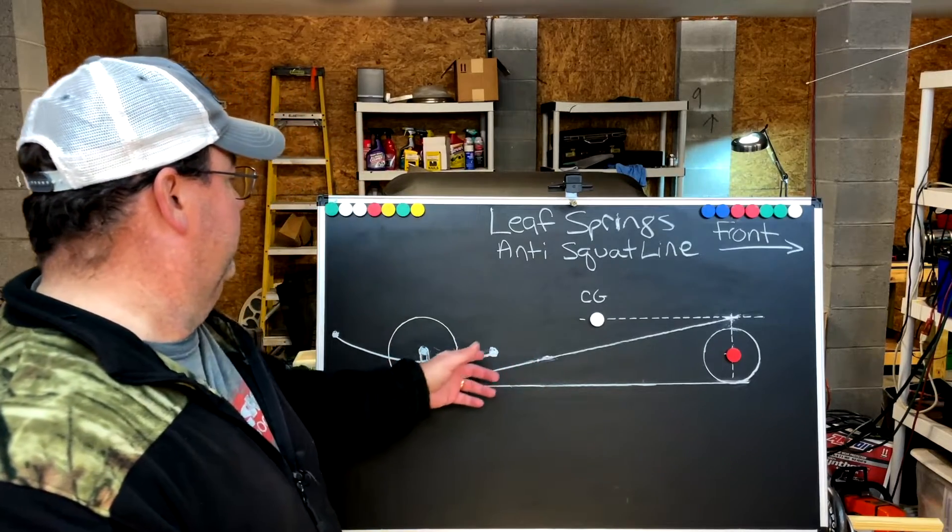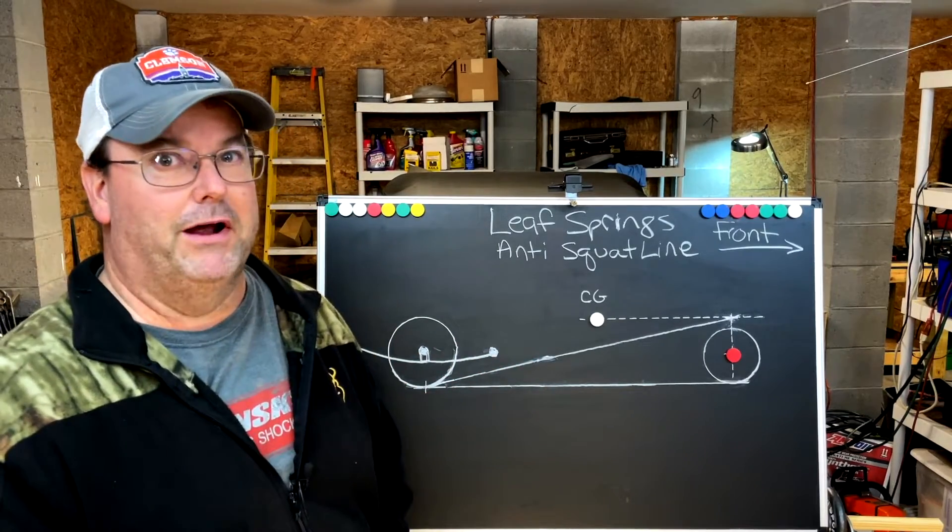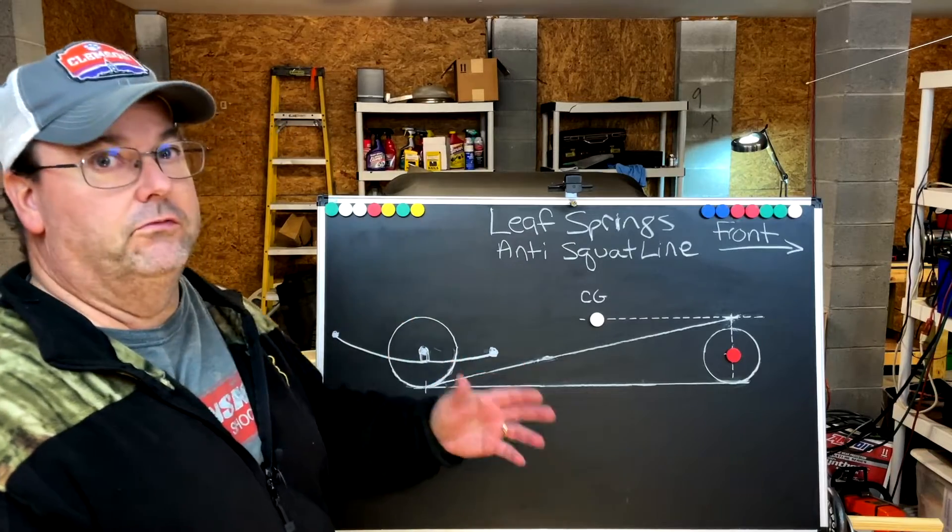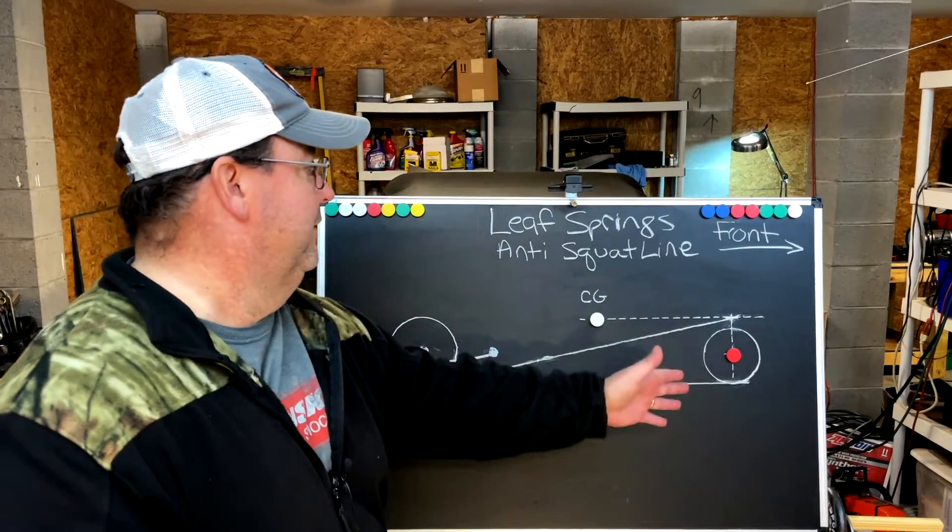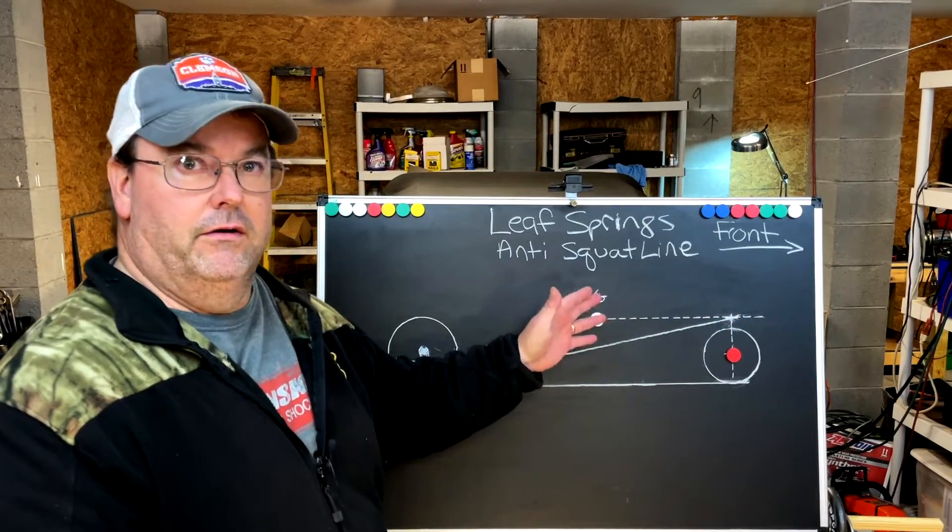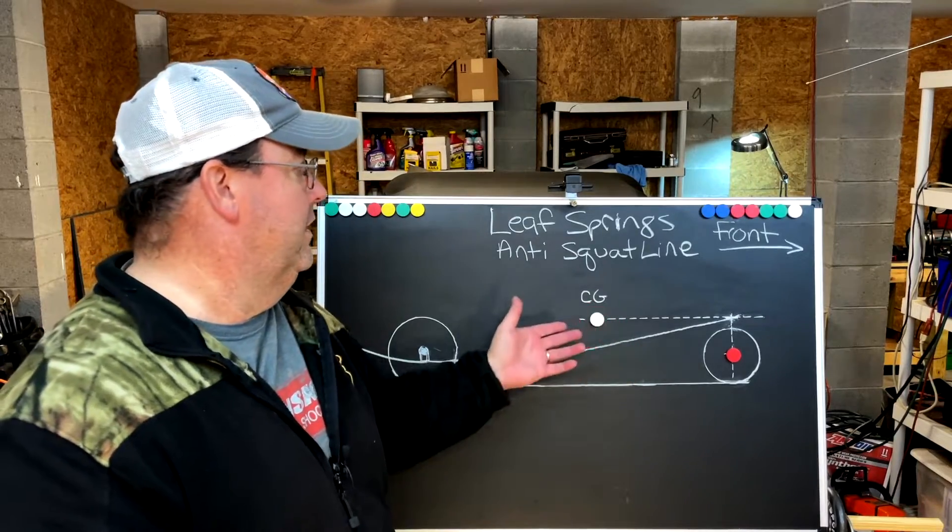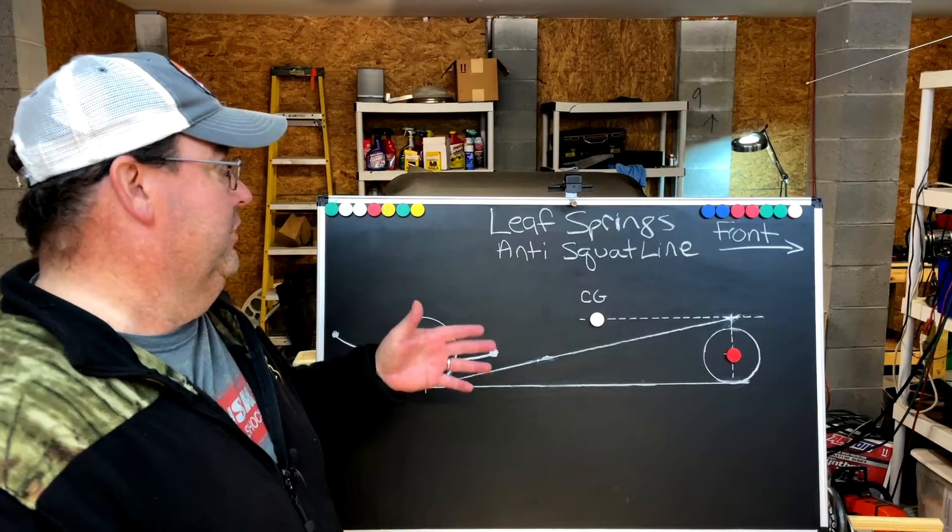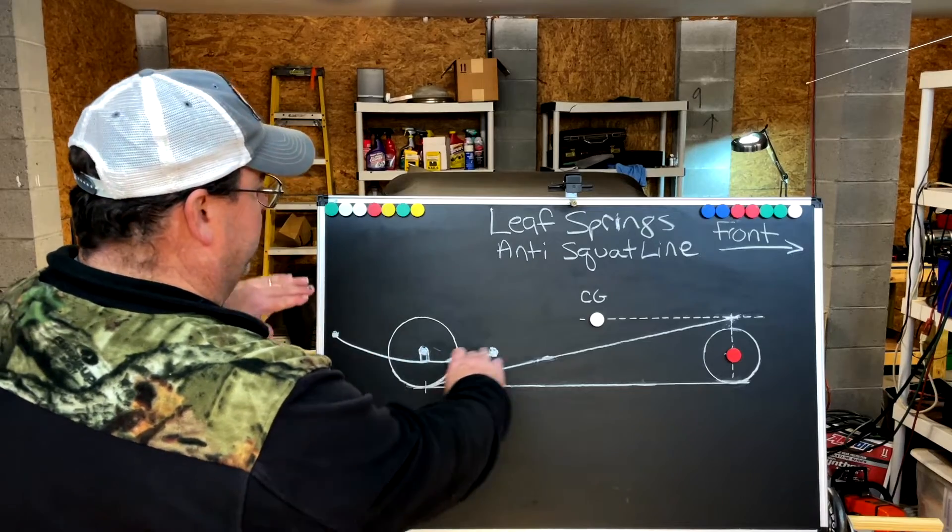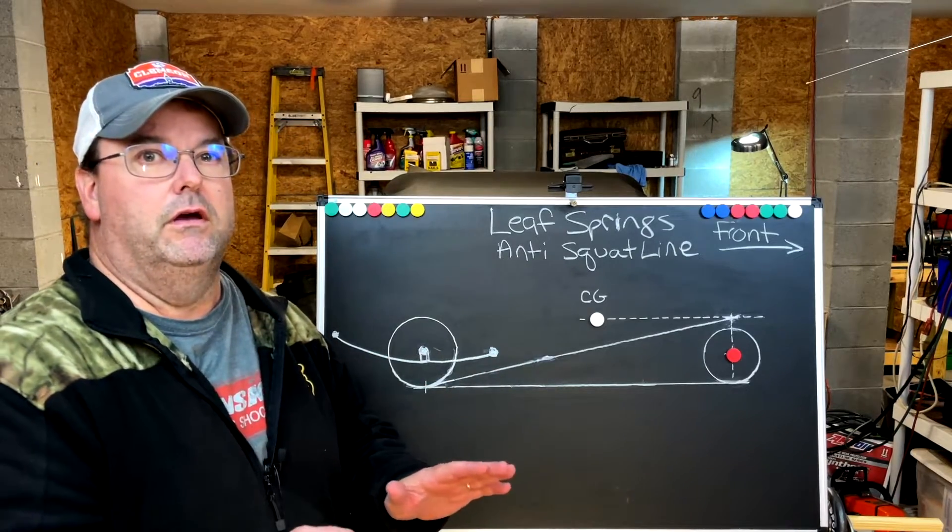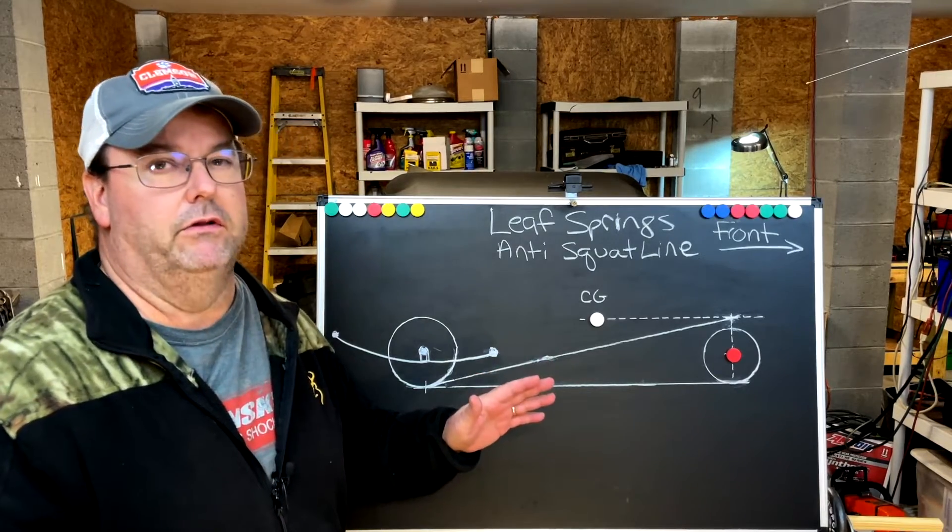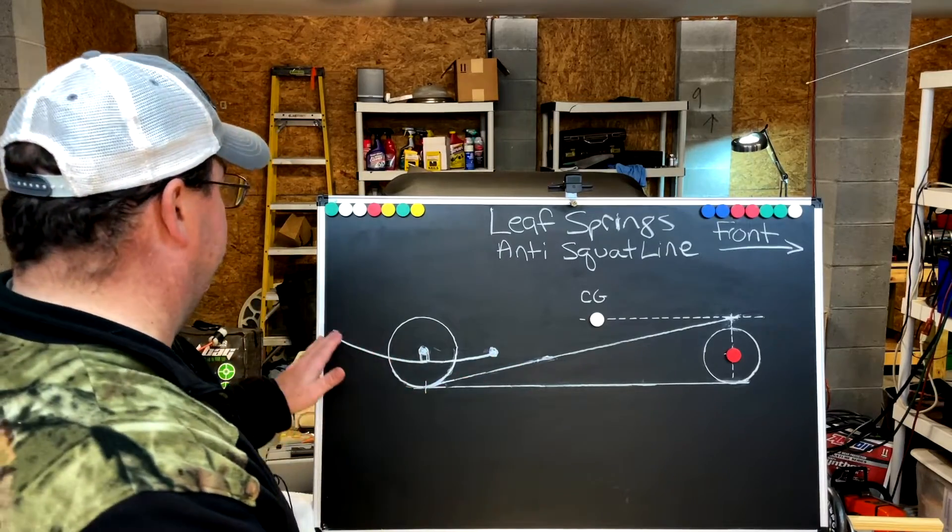So this is the same anti-squat line that I used for the 4-link video. So let's apply this to a leaf spring. Once again, I'm not an artist. This is not to scale. Now I actually try to draw it to scale as close as possible to real world by taking a 110-inch wheelbase and condensing it down, and then looking where the center of gravity fell on most standard 110-inch wheelbase cars. So this is not tremendously off scale, but it's not perfect. Let's look at the leaf spring.